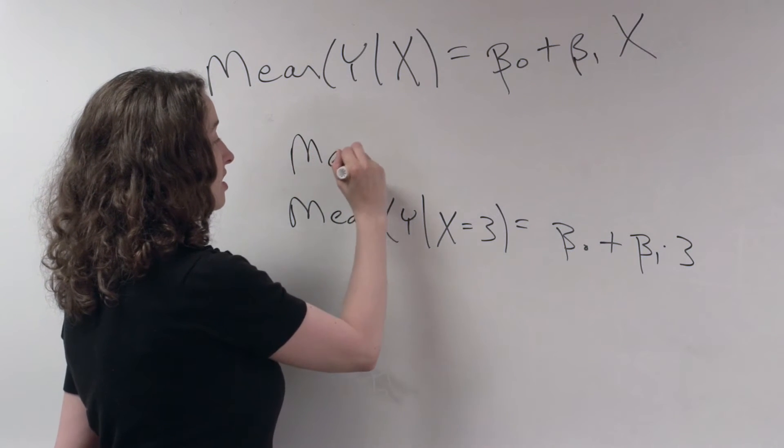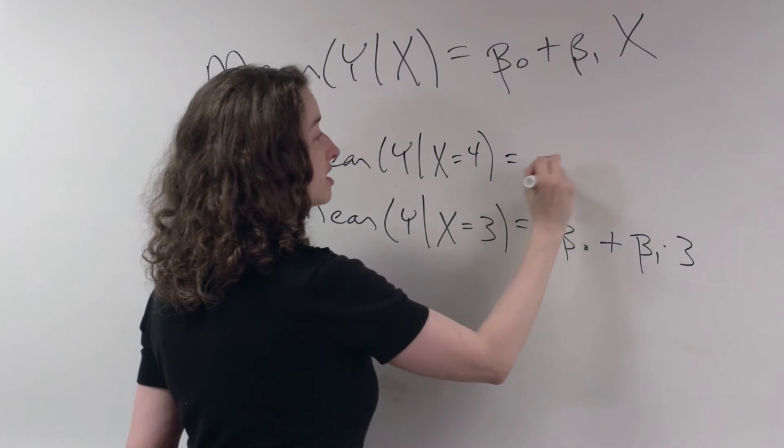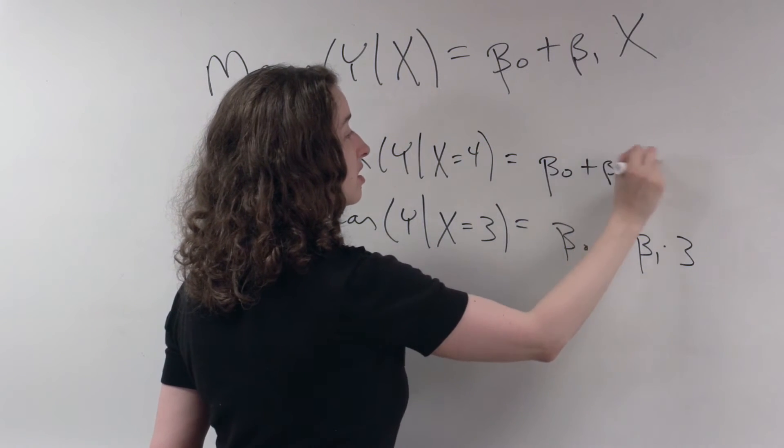And what if we're interested in the mean of Y given that X is equal to 4? Well, that's beta 0 plus beta 1 times 4.